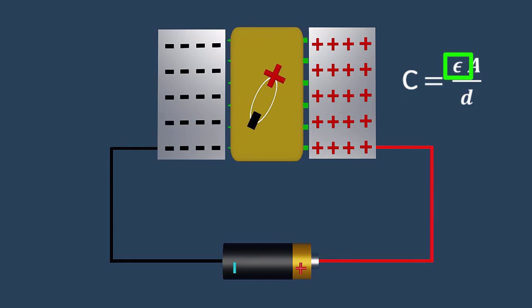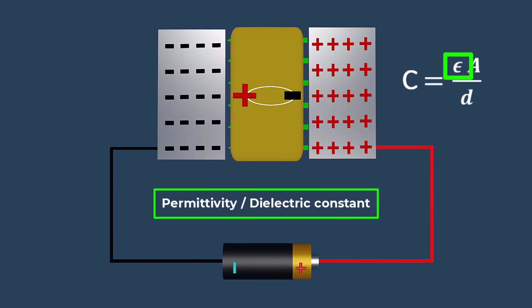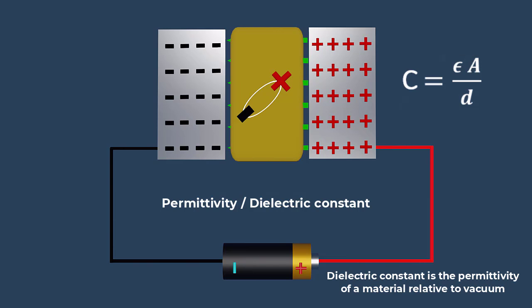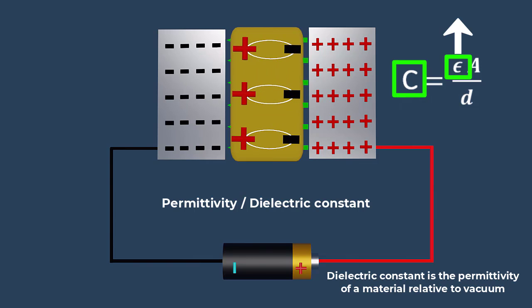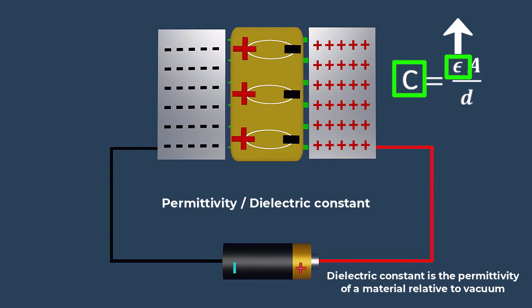The ease with which a dielectric material can be polarized is called permittivity, or dielectric constant of the material. The higher the dielectric constant of the material, the more easily it can be polarized and the greater its effect on the capacitance of the capacitor, allowing the capacitor to store more electrical energy.